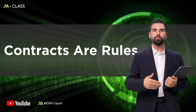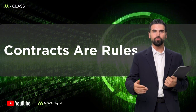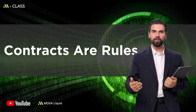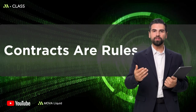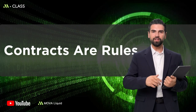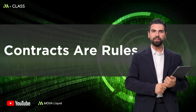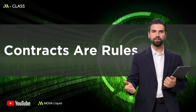Today we broke down how smart contracts turn business rules into verifiable, automatically executed logic — from state machines to ABI, logs, and security boundaries. I'm Jack, and this is MClass, taking you from beginner to expert. Thank you for watching, and see you in the next session.